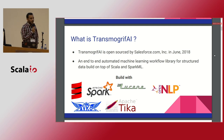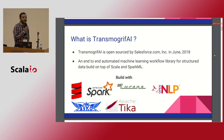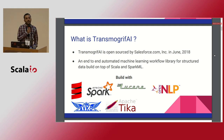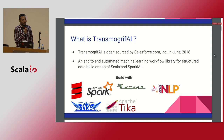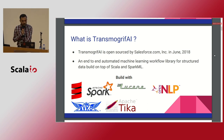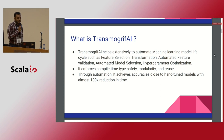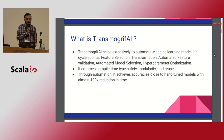Before that — when you talk about automating the ML workload, when you have unstructured data like vision and video, you have choices to automate. But when you talk about structured data — insurance data, finance data, different business domain data — you don't have too many choices. TransmogrifAI helps extensively to automate machine learning model life cycles such as feature selection, transformation, automated feature validation, automated model selection, and automated hyperparameter tuning.